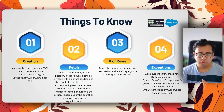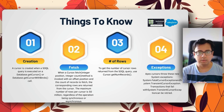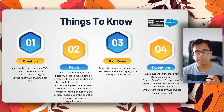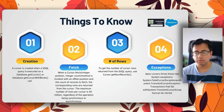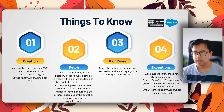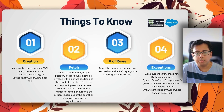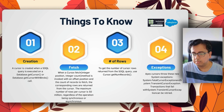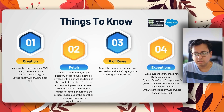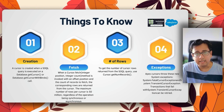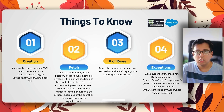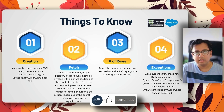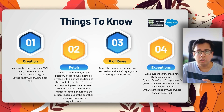The maximum number of rows per cursor is 50 million, regardless of whether it's a synchronous or asynchronous operation. To get the number of rows returned by the SQL query, the method is cursor.getNumRecords. Regarding exceptions, there are two types: system.FatalCursorException and system.TransientCursorException. Any transaction that fails with a TransientCursorException will be retried, whereas if the exception is a FatalCursorException, the transaction will not be retried.